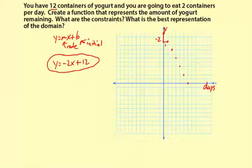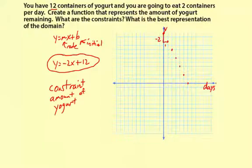What are the constraints? Well, a constraint is a limiting factor. And really the only thing limiting here is the amount of yogurt that you have. So you can't eat more yogurt than you have. Okay, so your constraint is the amount of yogurt you have.